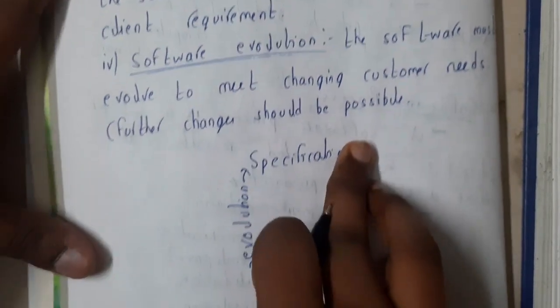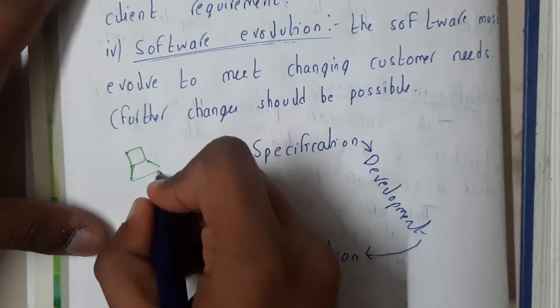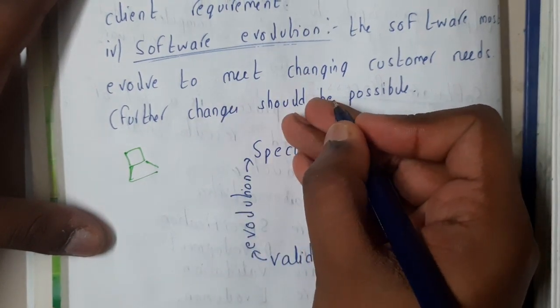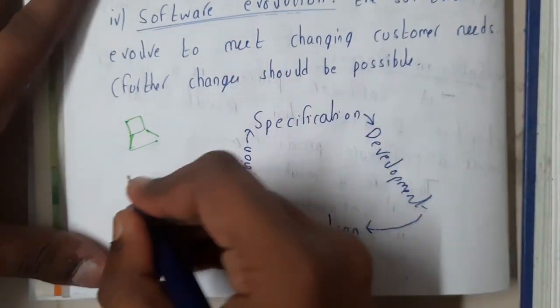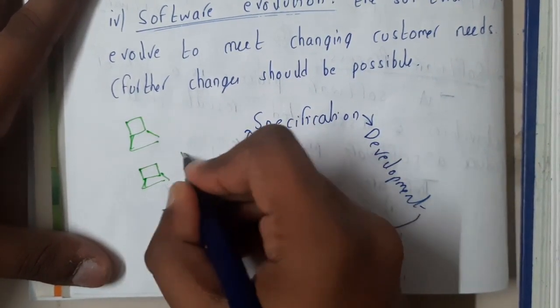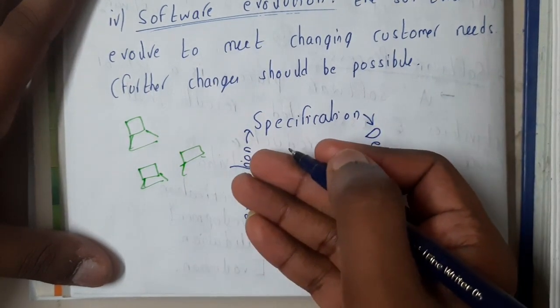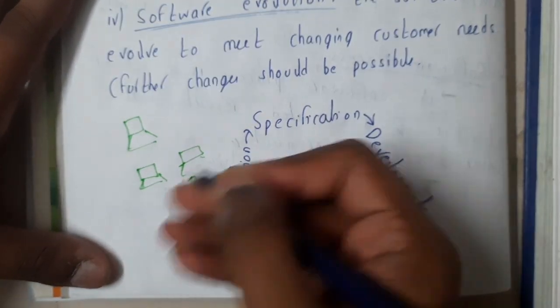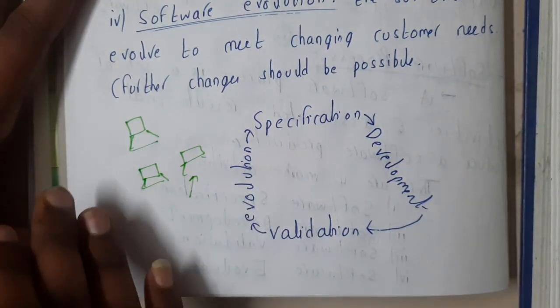I'll be just taking a small example. Previously whenever someone is shooting a video or recording a video, they used to buy special cameras for that. But nowadays we are using mobile phones, and even in mobile phones the clarity is higher than the cameras, right? In most of the cameras I'm talking, I'm not talking about high-end cameras.